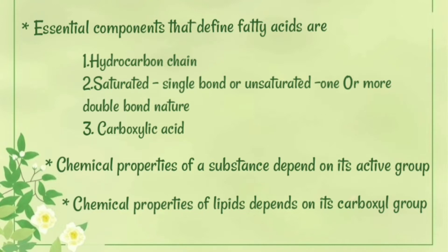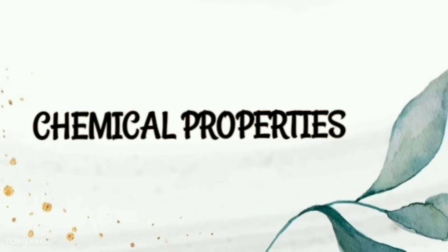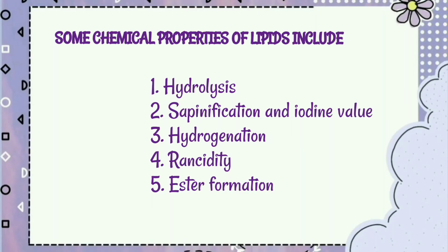Third component is the presence of a carboxylic acid. When we discuss the chemical property of a substance, it mainly depends upon the active group present in it. For lipids, it is the carboxyl group that determines its chemical property. Some of the chemical properties of lipids include hydrolysis, saponification, iodine value, hydrogenation, rancidity, and ester formation.